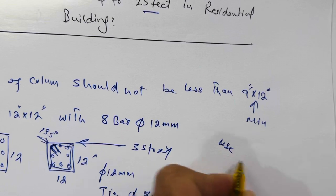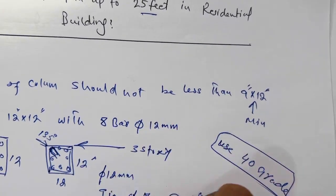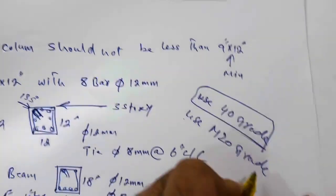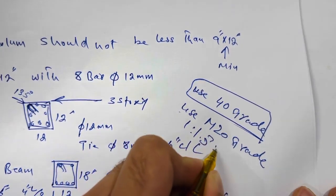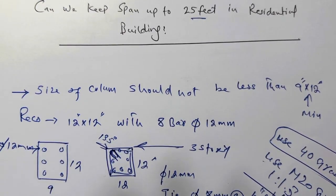Use 40 grade steel rod and use also M20 grade concrete which ratio is 1 ratio 1.5 ratio 3. Hope this short video can help you. Thanks for watching, see you in next video, goodbye.